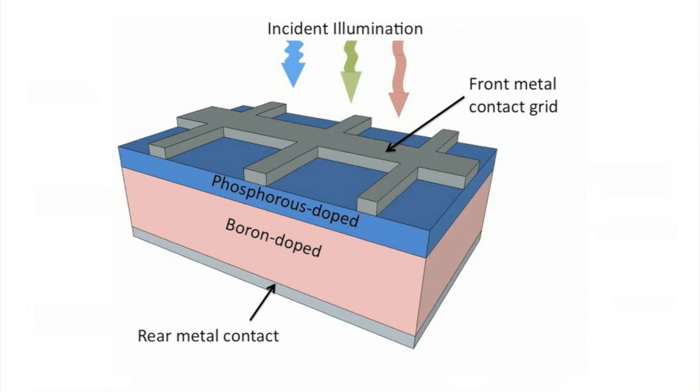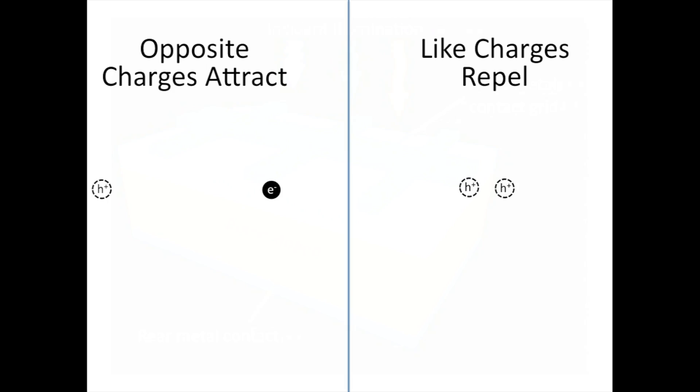The top layer is doped with phosphorus, shown in blue, while the bottom layer is doped with boron, shown in red. The different dopants interact in a way, which we'll describe shortly, to create an electric field in our device where the boron-doped and phosphorus-doped regions meet. It is this electric field that acts as a one-way valve in our solar cell for electrons and holes.